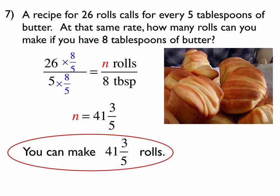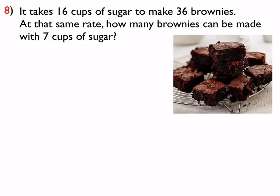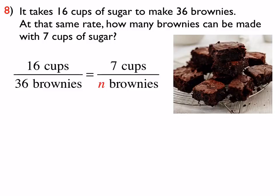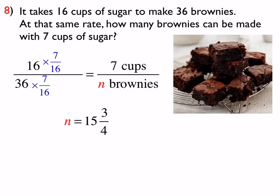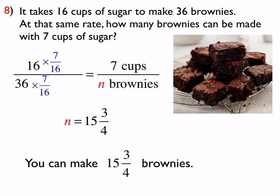I'd like all of you to do number 8 and number 9. Number 8 states: it takes 16 cups of sugar to make 36 brownies. At that same rate, how many brownies can be made from 7 cups of sugar? One possible proportion we could set up is 16 over 36 equals 7 over N. The multiplier is 7 sixteenths, because 16 times 7 sixteenths is 7. So 36 times 7 sixteenths is 15 and 3 fourths — if you have 7 cups of sugar, you can make 15 and 3 fourths brownies.